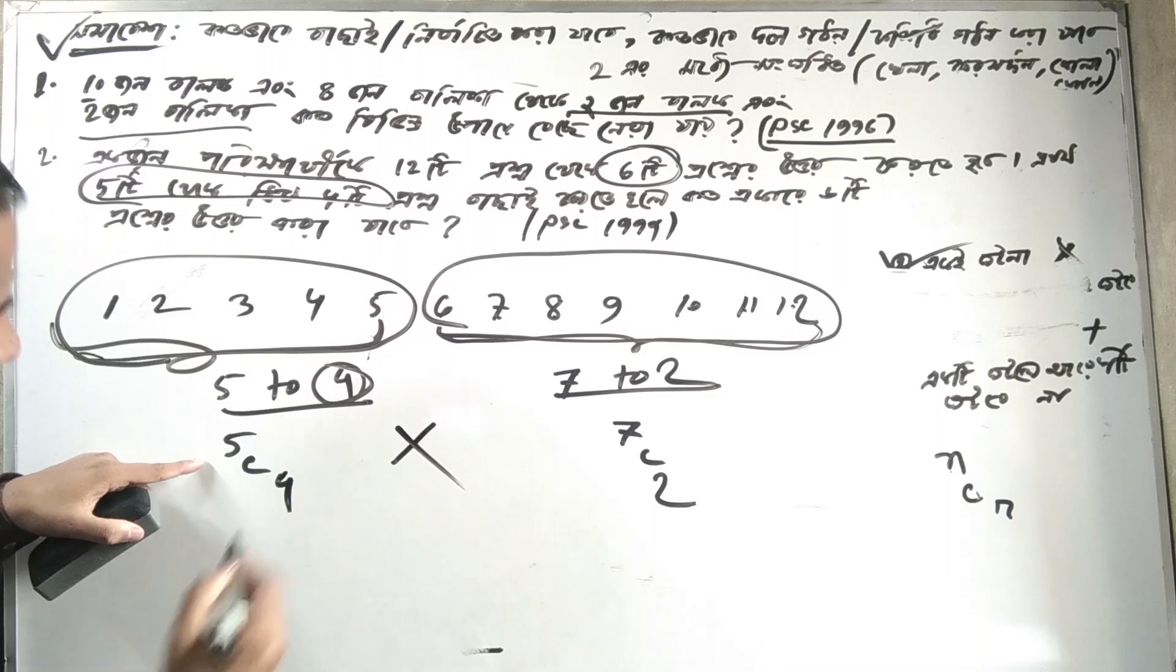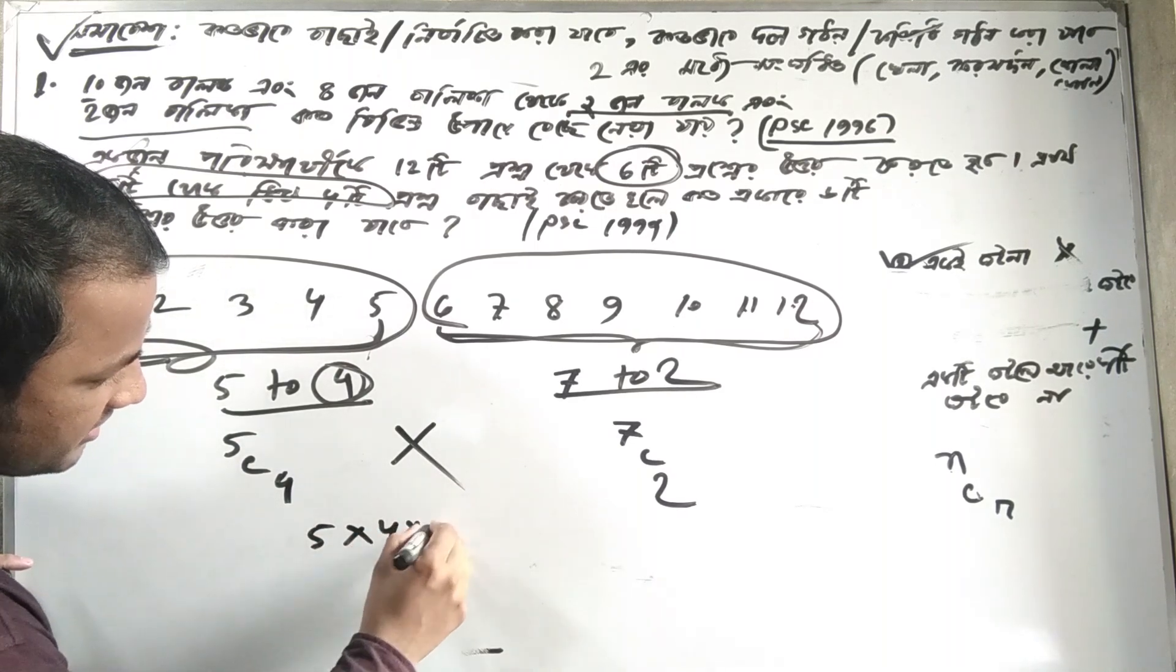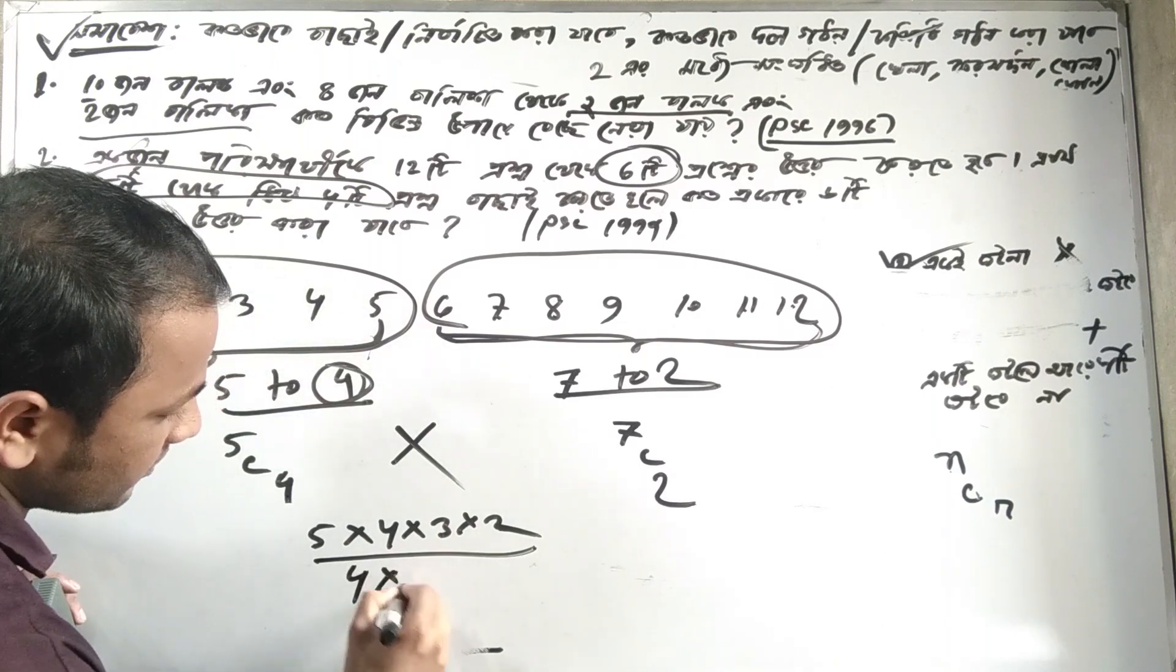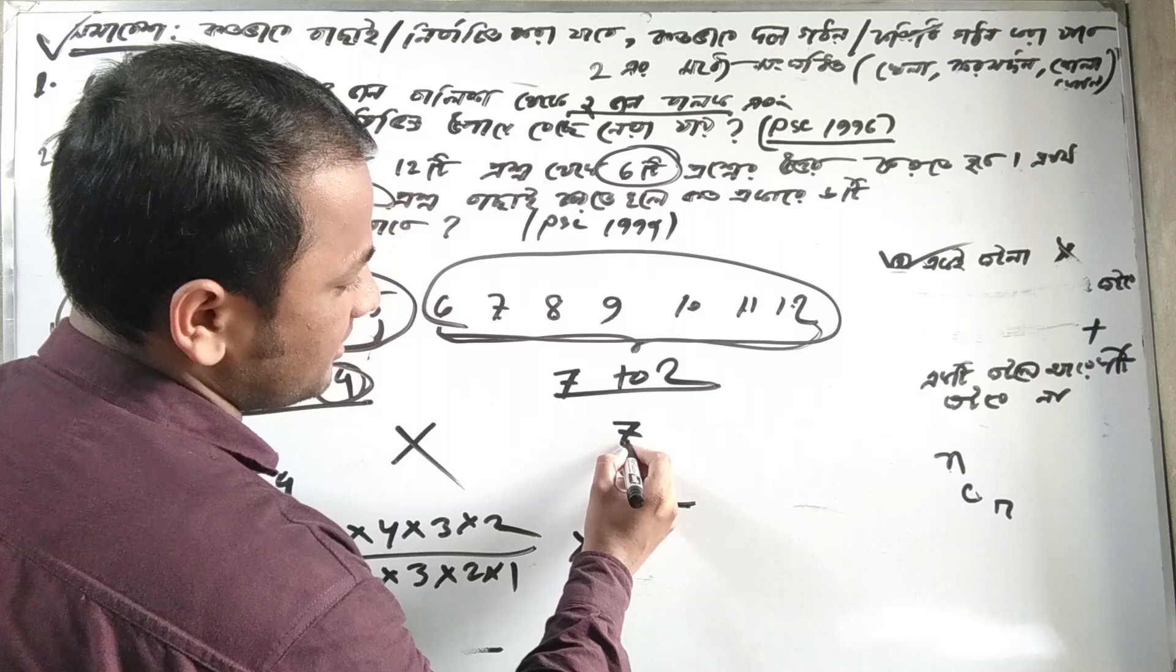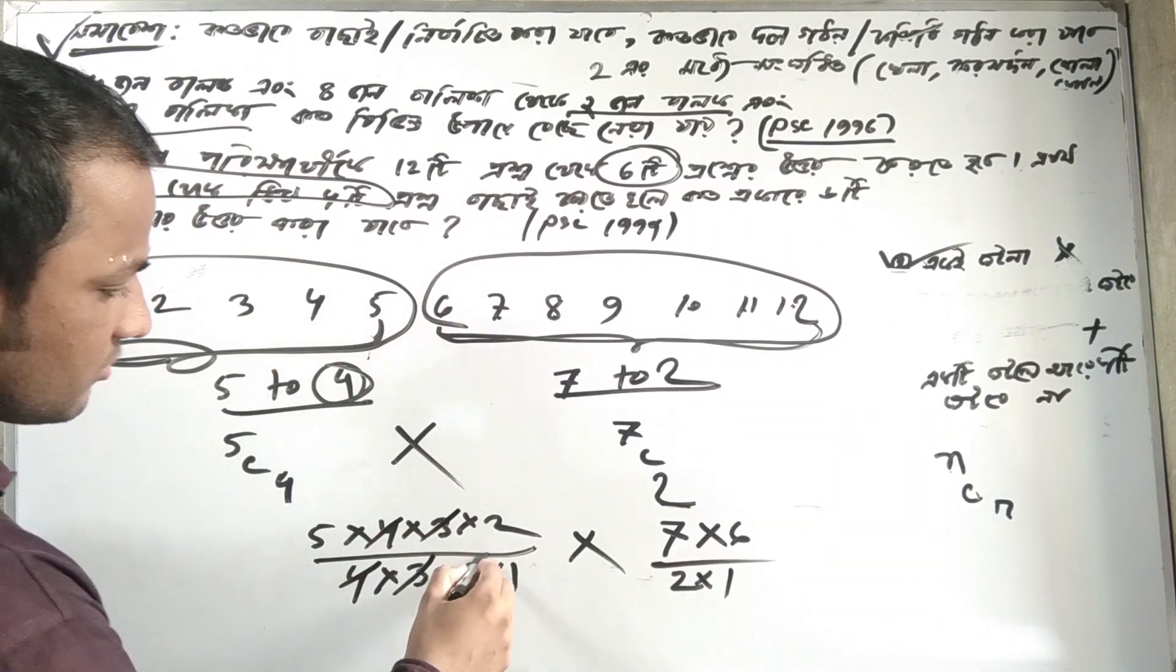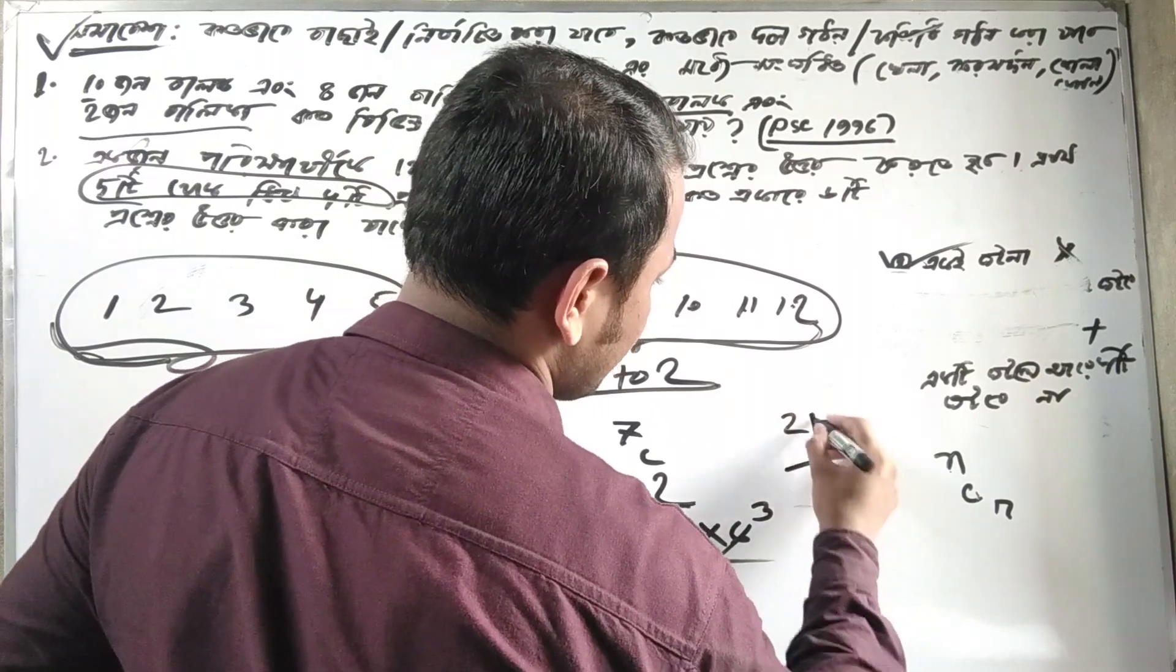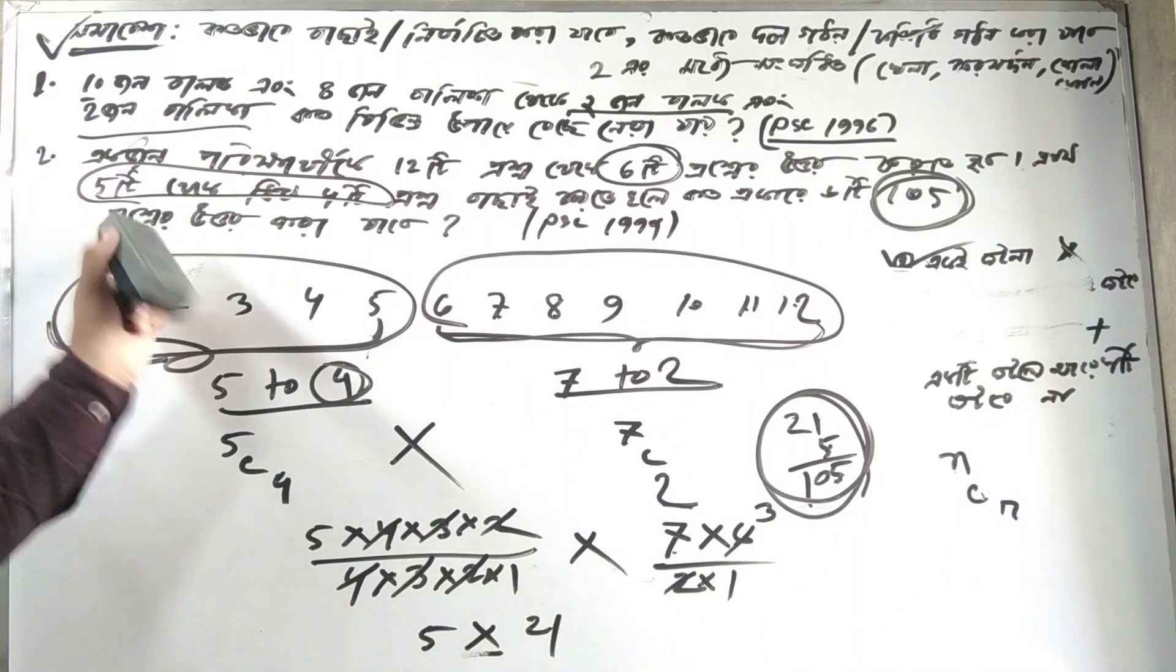For the extra fast method, you can use 7C2 calculations. The idea is to identify which combination formula applies and calculate directly. Whether it's four, five, or seven elements, use the appropriate nCr formula. This gives you the fastest path to the answer.